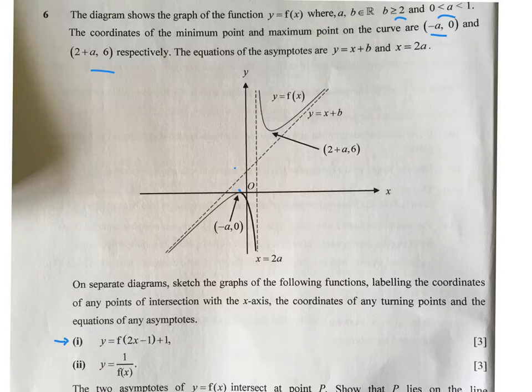Most of you actually got the asymptotes wrong, and some actually got the shape of the graph wrong. So how will it look like?